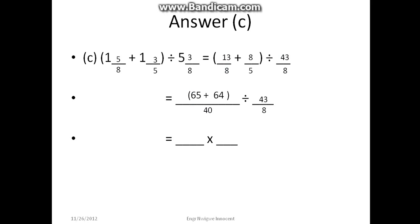This equals 129/40 (65 + 64 = 129). When dividing by a fraction, the numerator becomes the denominator and vice versa—we swap. So we have 129/40 × 8/43. After canceling, 8 divided by 40 gives us 5, and 129 divided by 43 gives us 3. Therefore we have 3/5.